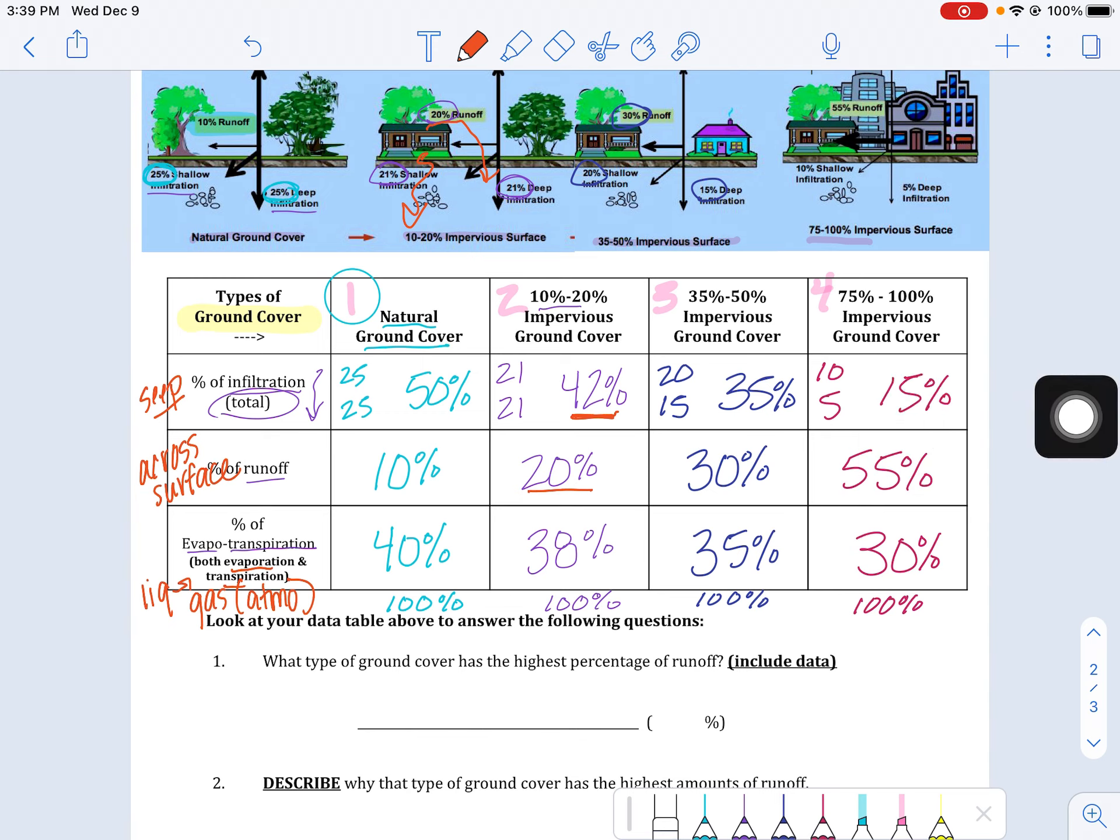So that's kind of what our questions are getting at. So here, what type of ground cover, so natural impervious, what percent has the highest runoff is what we're looking at, and we want to include the data there.